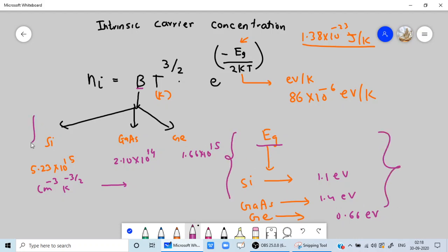You must remember these two values, the B and the Eg. Then you can go for the calculation. Just remember this formula: ni is equal to BT raised to 3 by 2 into e raised to minus Eg by 2kT for intrinsic carrier concentration.